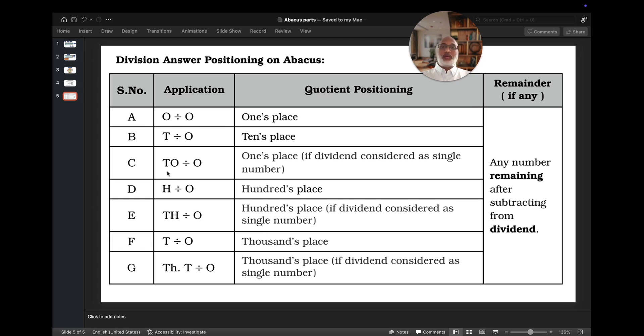And here comes very interesting part. If there are two digits, one's place and ten's place, both numbers you are combining, doing a division. Now, whatever the answer, that is quotient, it has to be placed in one's place only.